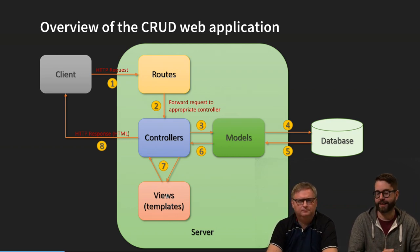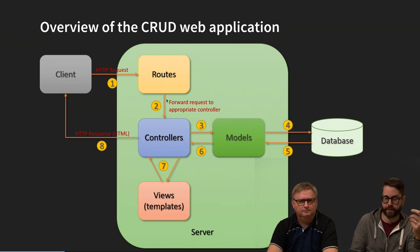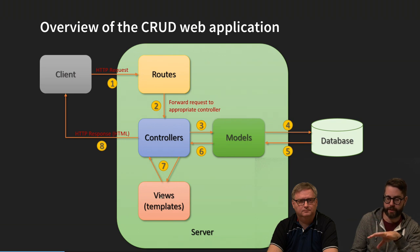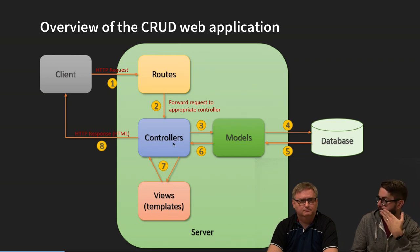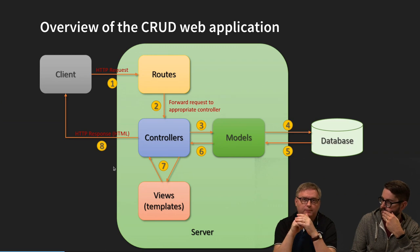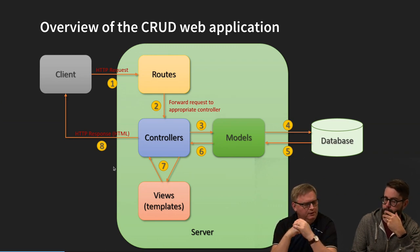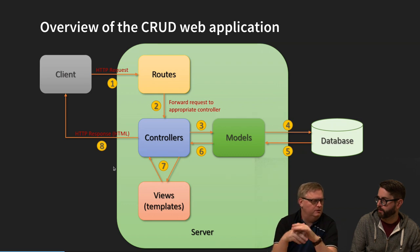In most cases you will need to fetch data from a database or store data in a database when handling calls from the client. So we are adding that — the controller, instead of just preparing the view, will now also fetch data using a model module and get data from a database through this module. The models encapsulate the data in the database. The names of the folders in our solution are routes, controllers, views, and models — that is the naming convention we chose.